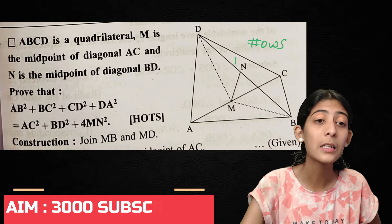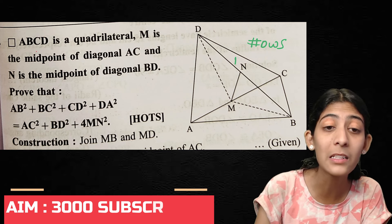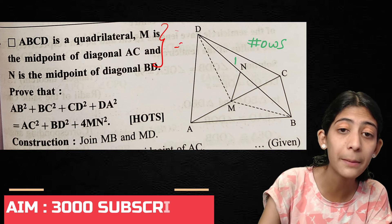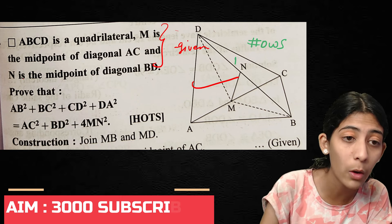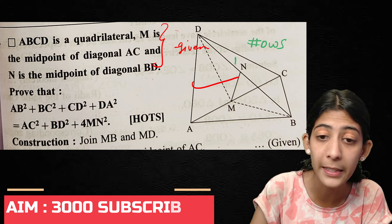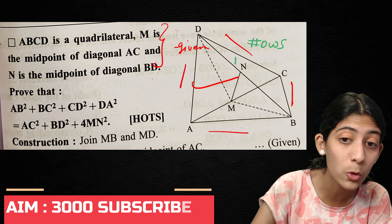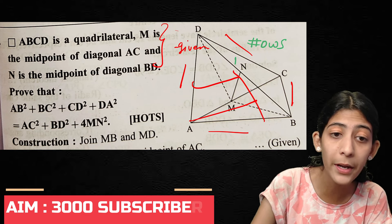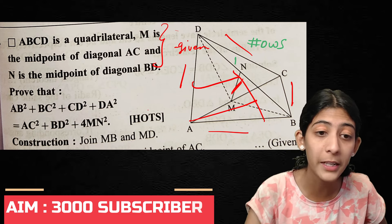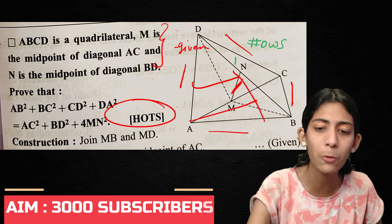Fourth question: ABCD is a quadrilateral. M is the midpoint of diagonal AC and N is the midpoint of diagonal BD. The figure is given. Prove that AB² + BC² + CD² + DA² = AC² + BD² + 4MN². You can find this question in the exercise or in the miscellaneous problem set below the exercise.